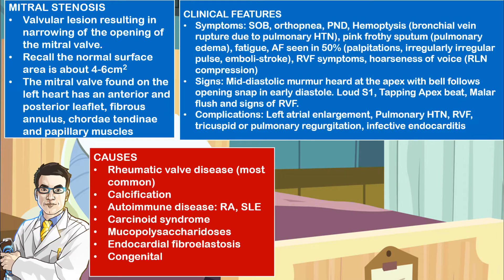Clinical features include symptoms such as shortness of breath, orthopnea, paroxysmal nocturnal dyspnea, and hemoptysis, which is often due to bronchial vein rupture secondary to pulmonary hypertension. Pink frothy sputum may occur due to pulmonary edema. Other symptoms include fatigue, atrial fibrillation seen in 50% of patients presenting with palpitations and an irregularly irregular pulse, an embolic phenomenon that may present with stroke, features of right ventricular failure, and hoarseness of the voice due to recurrent laryngeal nerve compression.